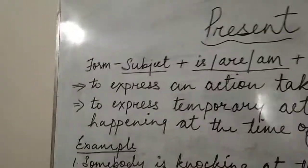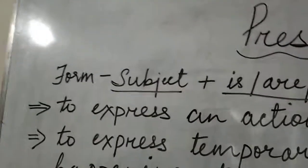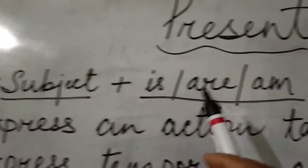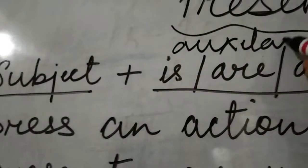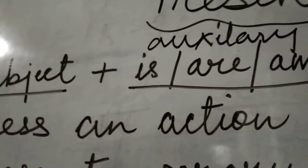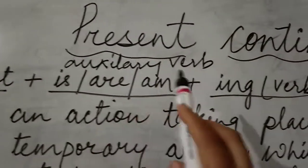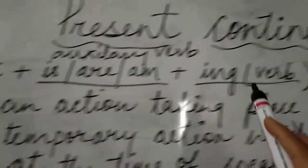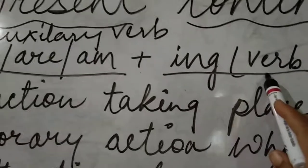Now we will know the form — how it is formed. First the subject will come, then is/am/are, which is an auxiliary verb. Without the auxiliary verb, the continuous form cannot be formed. Then plus the ing form of the verb.